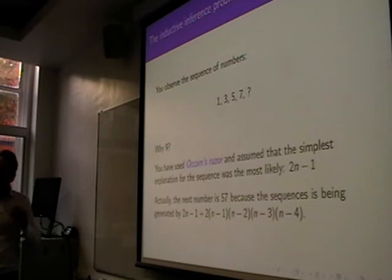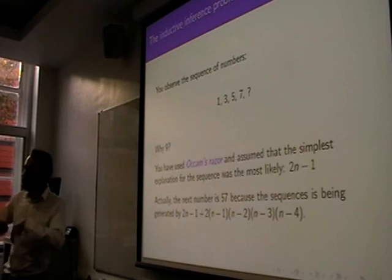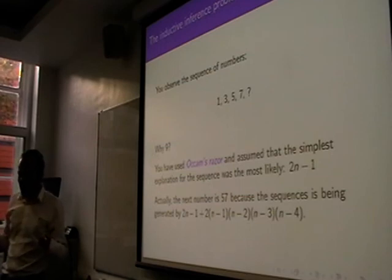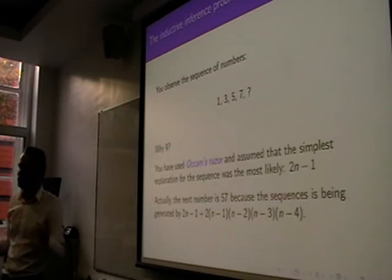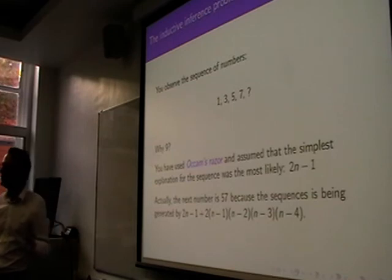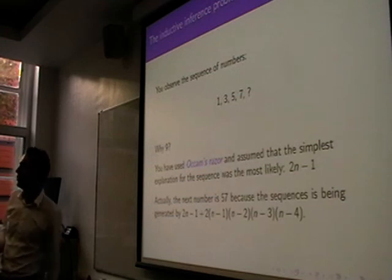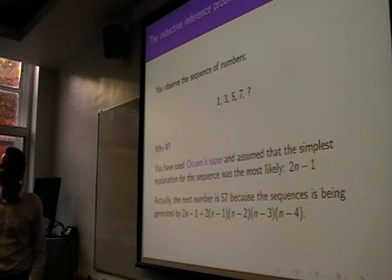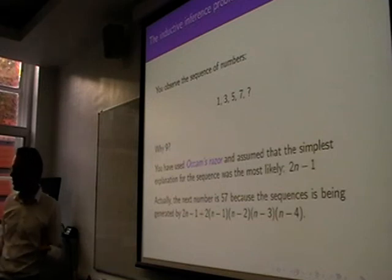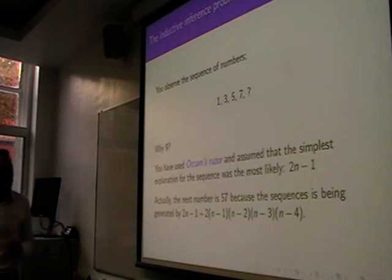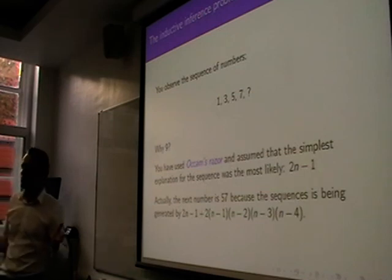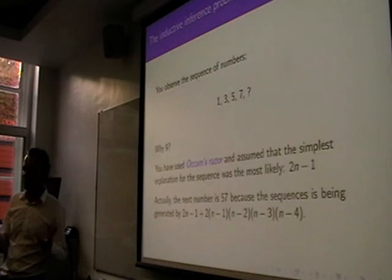This highlights a second important principle: there's actually an enormous space of possibilities, an enormous space of different explanations for things that you've seen. You can't throw any of them out if they're consistent with what you've seen. If they're inconsistent with what you've seen, then sure they can't be right because what you've seen is impossible under this hypothesis. But you can't throw away ones that are consistent, even if they seem quite unlikely.